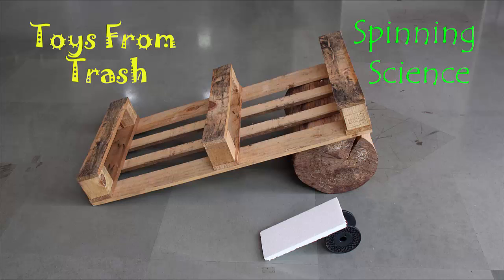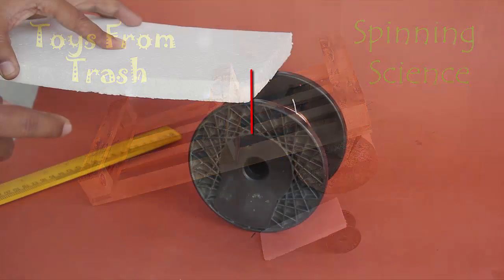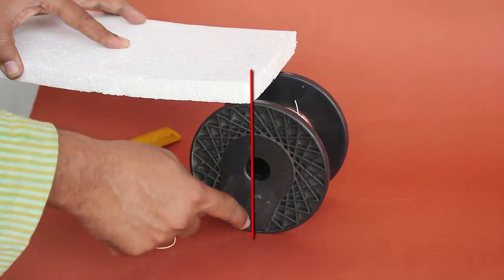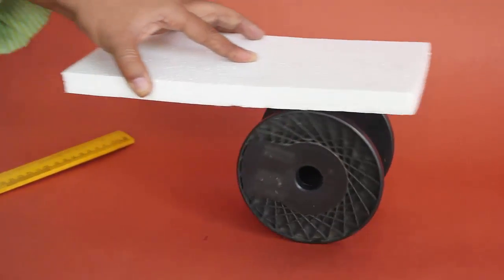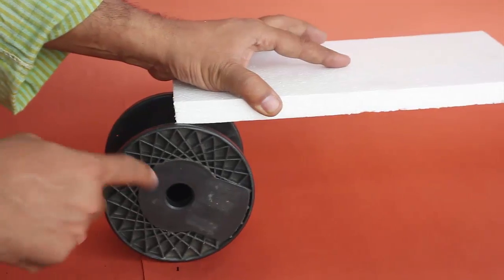So we will first place this piece on the spool and move the piece forward. Notice that at the front end, the piece and the spool are at the same point.